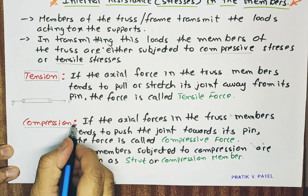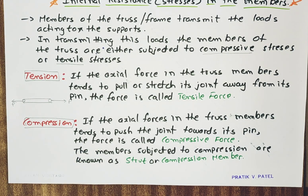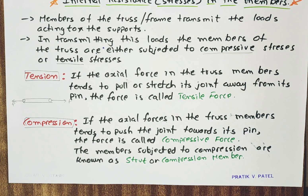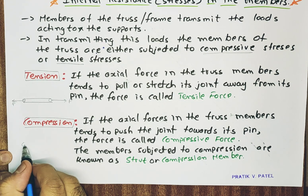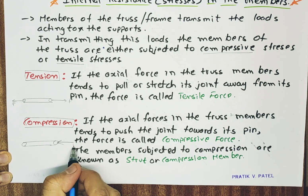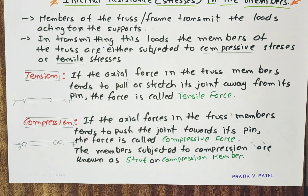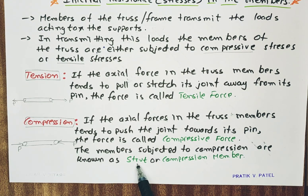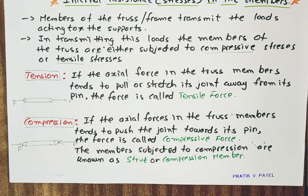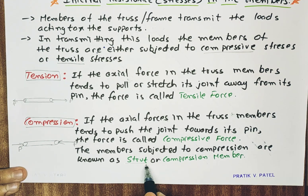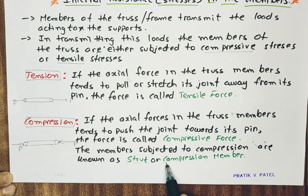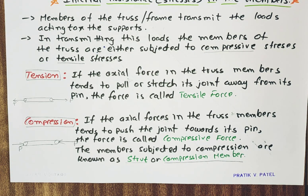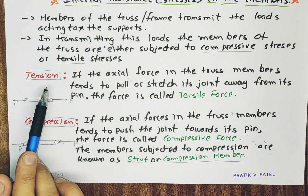Opposite of that — compression. If the axial forces in the truss members tend to push the joint towards its pin, the force is called compressive force. If this is force P and this is another force P, it will tend to compress the member, and compressive stresses will be developed in the member. The members subjected to compression are known as a strut or compression members. Because the angle of the member is not defined we can call it a strut; if it is at right angle we can say compression member. If the force is tensile, we can say tensile member.